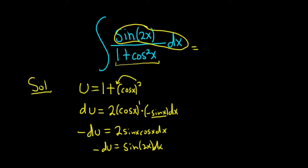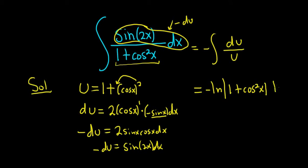So this becomes negative du. That this whole piece here is negative du. And the bottom piece is just u. And whenever you have du over u, that's just an ln. So this is negative natural log absolute value of u, but u is just 1 plus cosine squared. And then we have our plus C.